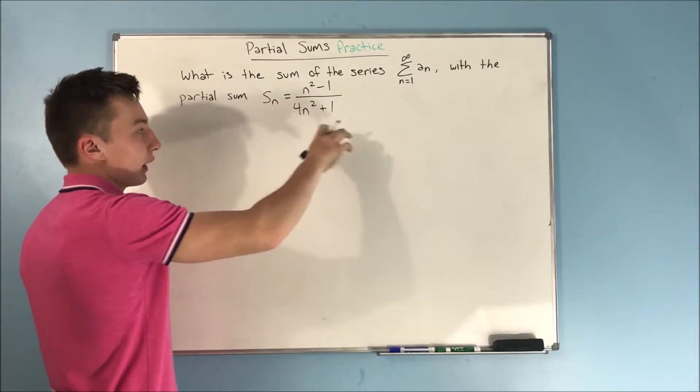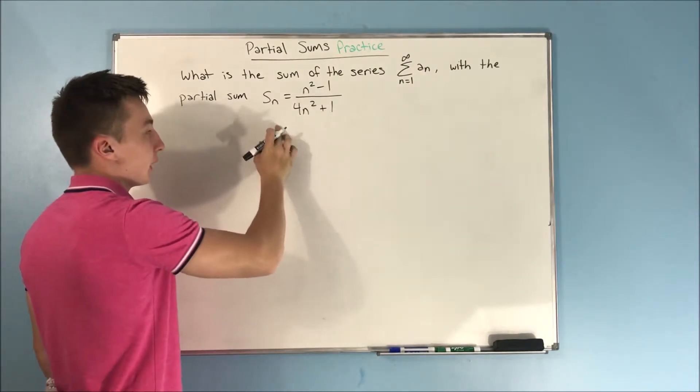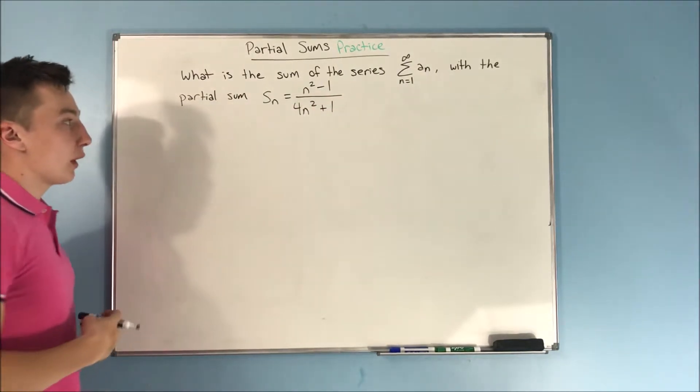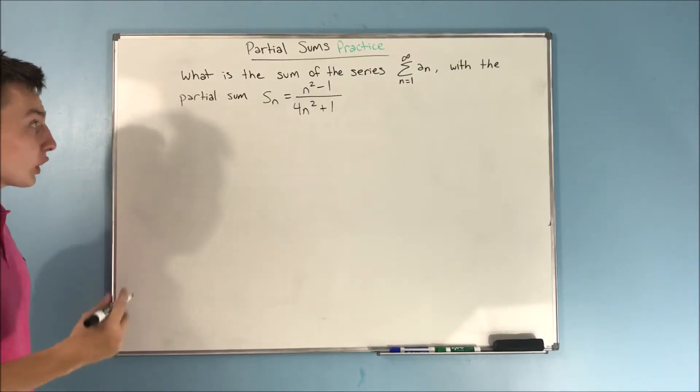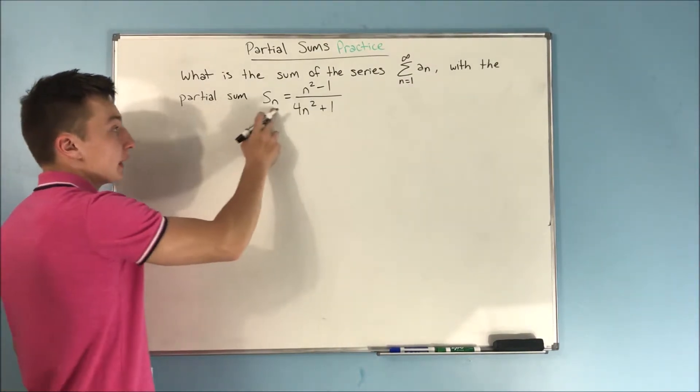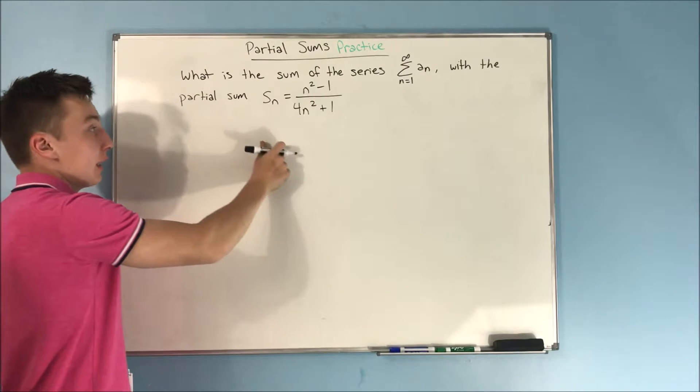We have, what is the sum of that series? With the partial sum, S of n equals n squared minus 1 over 4n squared plus 1. So what we need to do now, right?